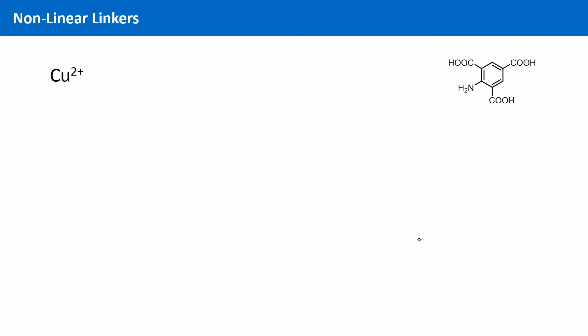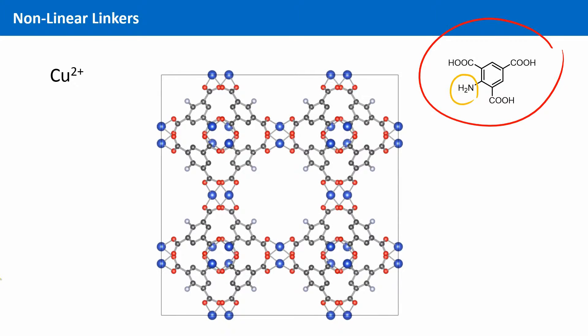Another linker that is very similar to the BTC linker is this one. It has the same arrangement of the carboxylic groups, but this one is decorated with an amino group. MOFs made from this linker have been developed in our group. And you can in fact obtain the same structure as in HKUST-1, but now with amino groups pointing into the pores.